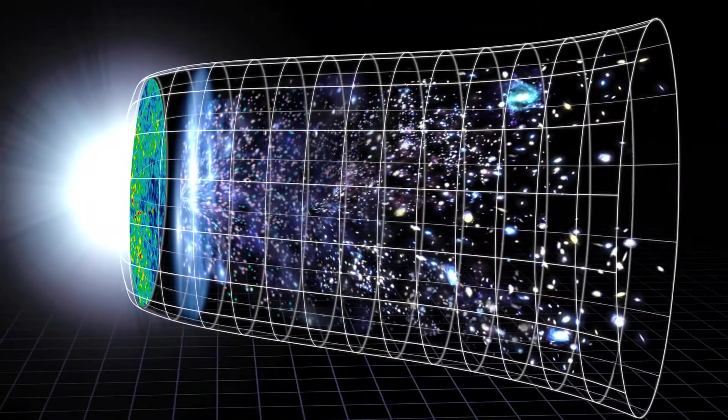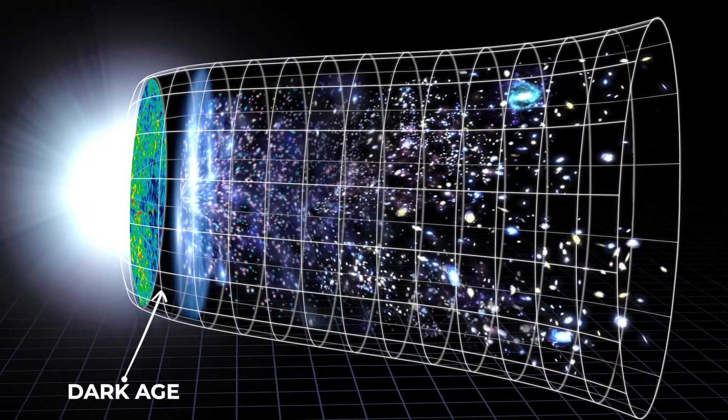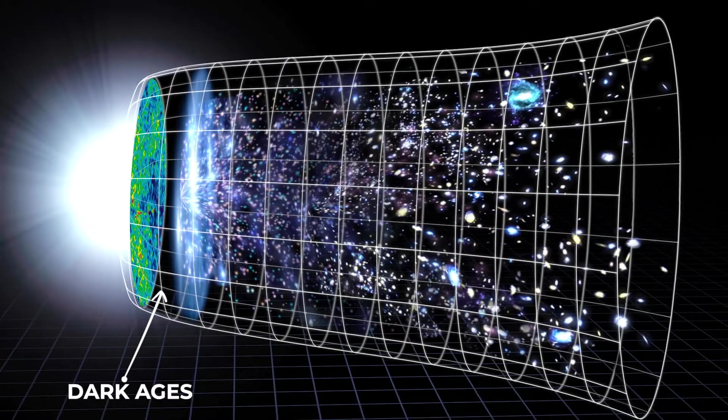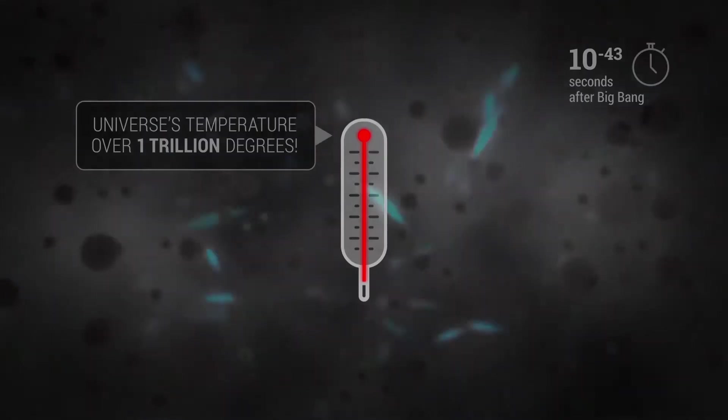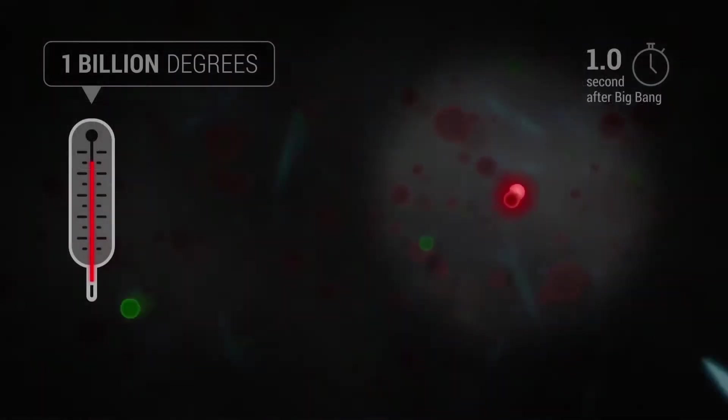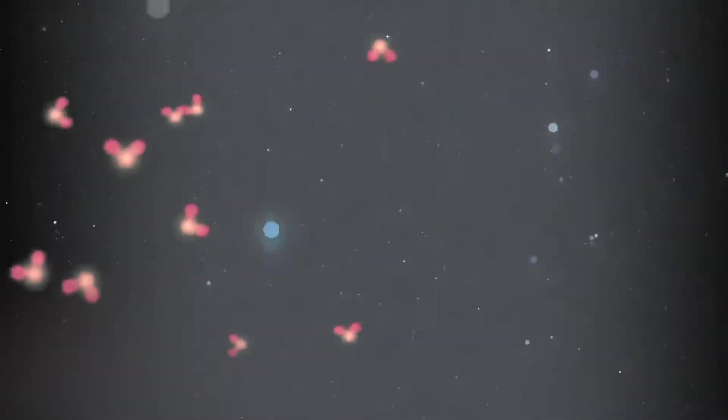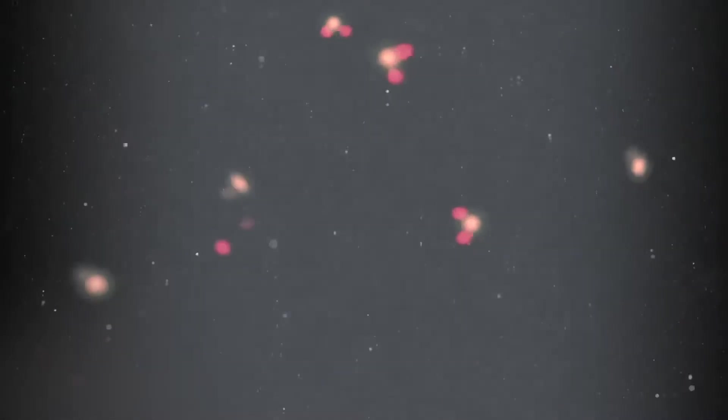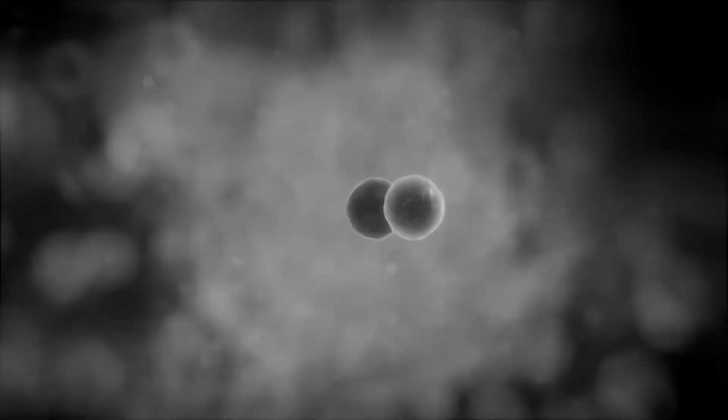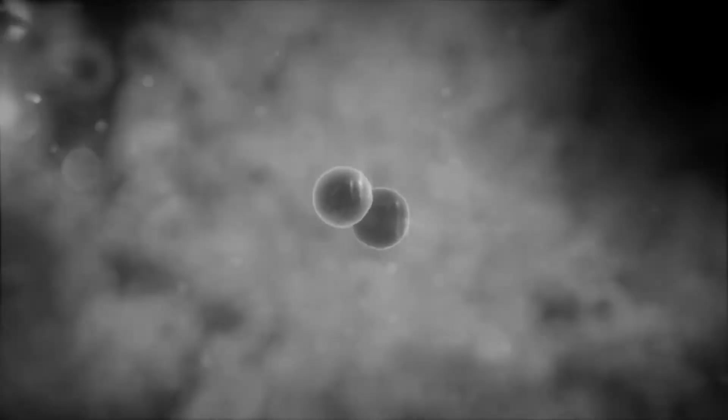After matter gained the upper hand, the universe was a very dark place with no stars, no galaxies, just a hot particle soup swirling with protons, neutrons and electrons. Eventually, as the cosmos continued to grow, it cooled enough that protons and neutrons began to combine and form the very first ionized atoms of hydrogen and deuterium, which then fused to form helium.